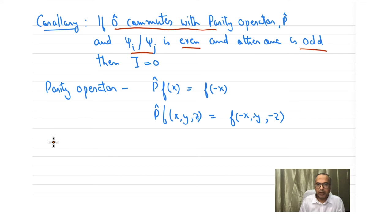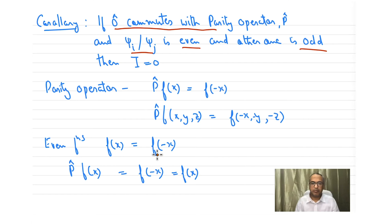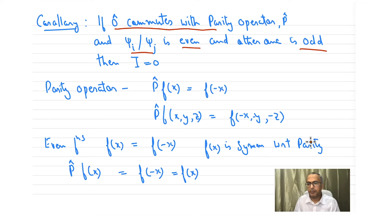Now let's apply parity on different types of functions. For an even function, f(x) = f(−x). So if we apply parity on an even function, we get f(−x), which equals f(x) — because for an even function these two terms are equal. We can say that f(x) is symmetric with respect to parity.